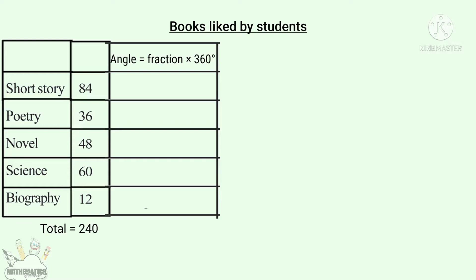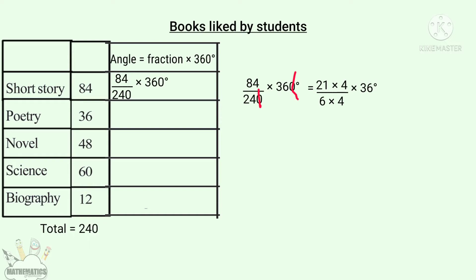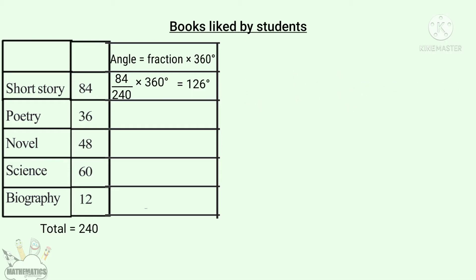For Short Story, the fraction is 84 by 240. So the angle is 84 by 240 into 360 degrees. The zeros cancel. 84 is 21 into 4, and 24 is 6 into 4. This becomes 21 into 4 by 6 into 4 into 36 degrees. The 4s cancel. For Poetry, the fraction is 36 by 240 into 360 degrees.